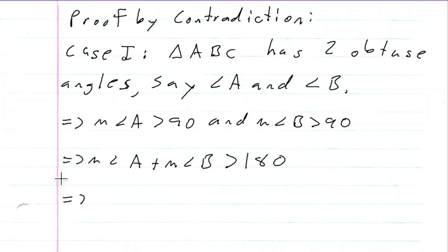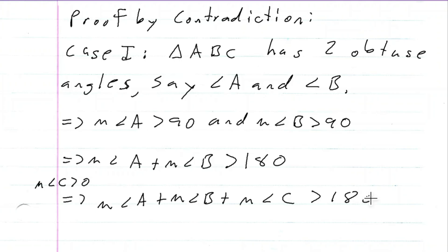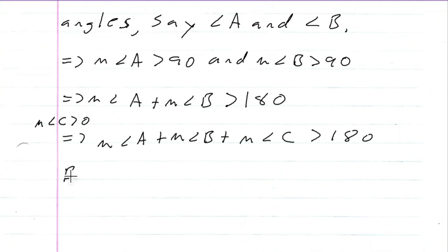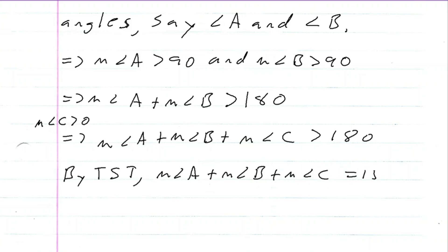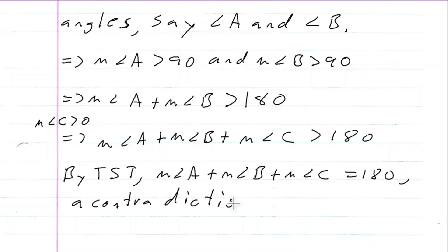Since we know that all angles in a triangle are bigger than zero — the measure of angle C is bigger than zero — we know that the measure of angle A plus the measure of angle B plus the measure of angle C is bigger than 180. But by the triangle sum theorem, we know the measure of angle A plus the measure of angle B plus the measure of angle C is equal to 180. We can't have the sum be both bigger than 180 and equal to 180. So this is our contradiction.